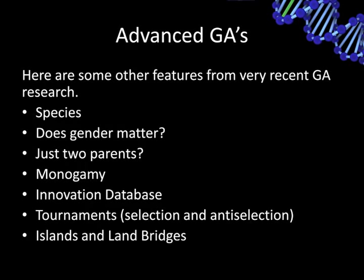There are many additional advanced features you can add to genetic algorithms. For example, you might use species and only allow crossover between similar solution vectors. You can consider whether gender matters, use many different parents, or introduce monogamy — where two particular solutions mate again in the next generation. An innovation database prevents repeatedly trying the same mutation that didn't produce good results. You can use tournaments where genomes compete for survival, or use islands and land bridges to separate and later reintroduce populations.